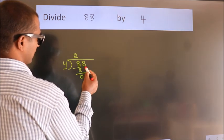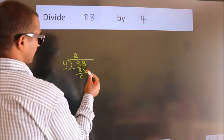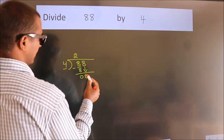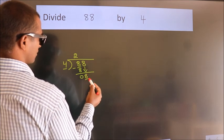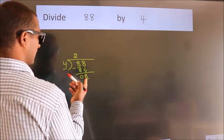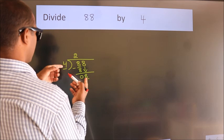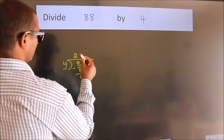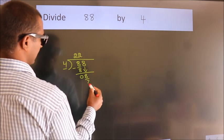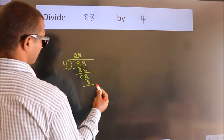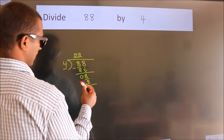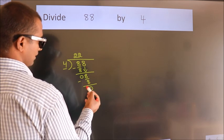After this, bring down the beside number. So 8 comes down — so 8. When do we get 8 in the 4 table? 4 twos are 8. Now we subtract. We get 0.